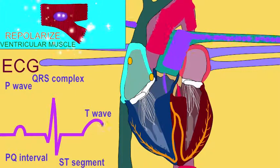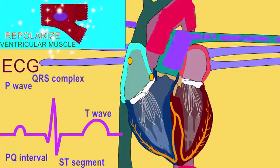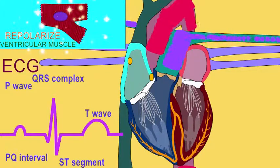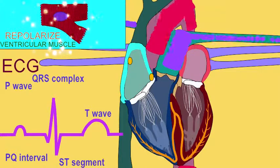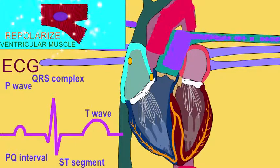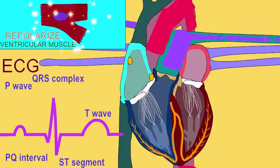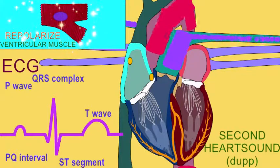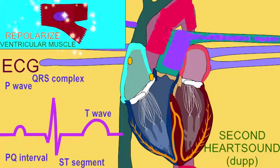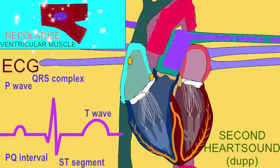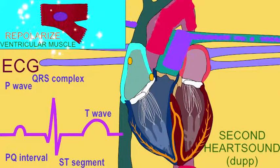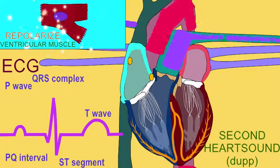During the T wave, the ventricles will repolarize. As they do so, their systole ends. The semilunar valves will be forced shut because blood will attempt to return from the pulmonary trunk and the aorta into the right and left ventricles, going from an area of high pressure to low. The turbulence in the blood which results when that blood is redirected will create the second heart sound. So if our heart sounds during a cardiac cycle are lub-dub, the lub is the turbulence in the blood when the AV valves shut, and the dub occurs in the T wave.